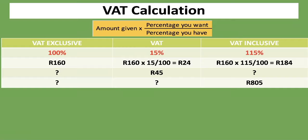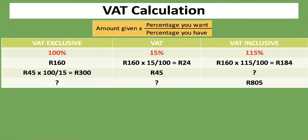We have a VAT amount of 45 RAND, which is 15%, and we have to calculate the VAT Exclusive and the VAT Inclusive. For VAT Exclusive: 45 RAND multiplied by 100% divided by 15%, which gives us 300 RAND. For VAT Inclusive: 45 RAND multiplied by 115% divided by 15%, which gives us 345 RAND. And if you add VAT Exclusive plus VAT — 300 plus 45 — it gives you the same answer of 345 RAND.